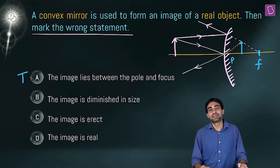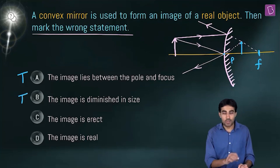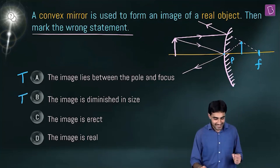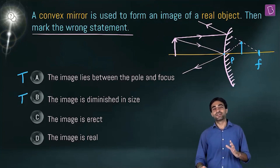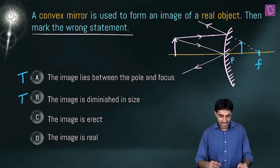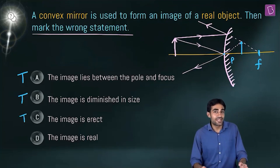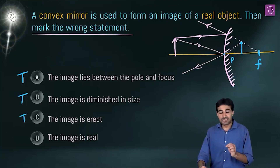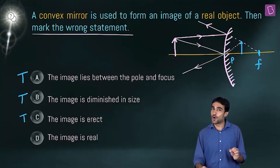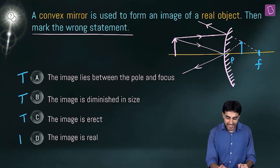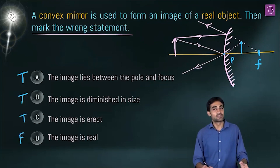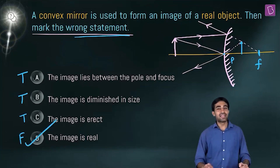Option B says the image is diminished in size — it is smaller than the object, so option B is also true. Option C says the image is erect — we can see the image is erect, so option C is also true. Option D says the image is real — it is not real, it is virtual. So option D is false and we pick option D as the wrong statement.